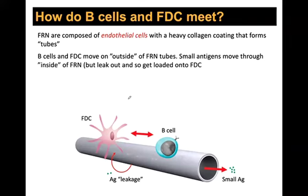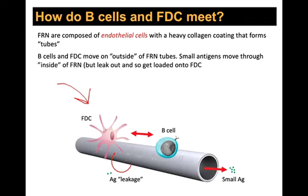Clarification: the FRN passive diffusion route applies to antigens undergoing passive diffusion. For active transport, FDCs are loaded via the follicular B cell intermediate mechanism. But in any case, FDCs are still traveling on the outside of the follicular reticular network however they got their antigen.